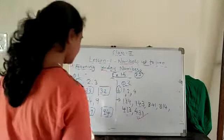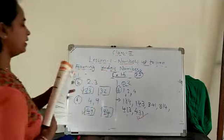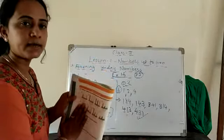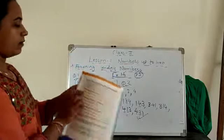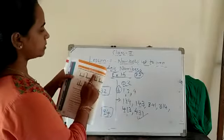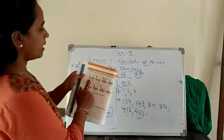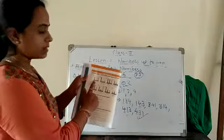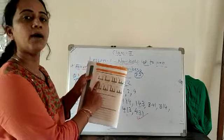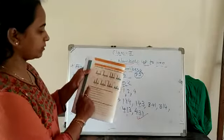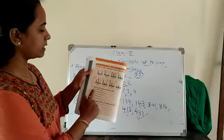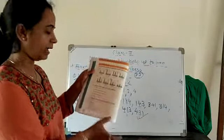Now turn the page. Here there is a revision exercise — complete this revision exercise yourself. First question: write numbers corresponding to the abacus representation given below. Here an abacus is drawn with 100s place and 1s place — yaha pe aapko number likhna hai. Then question 2: read the number names and write the numbers — yaha pe numbers ke naam diye hain, aapko number likhna hai.